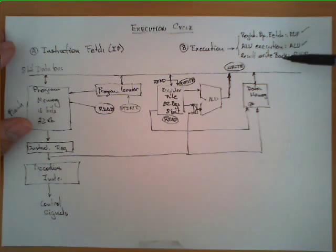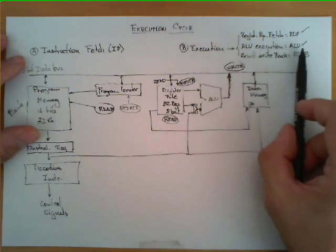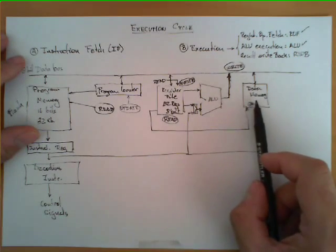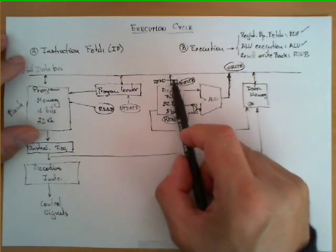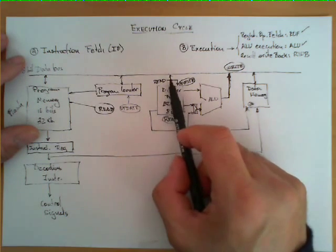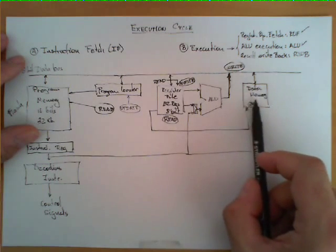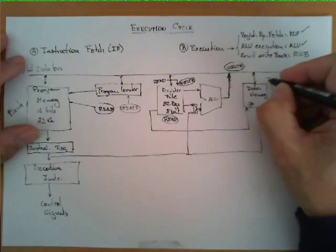For an instruction that reads or writes from memory, the three stages are the same with the exception that instead of the ALU performing an operation, the memory reads or writes the data. If it is a read operation, the result goes back to the bus and back to a register. If it is a write operation, data comes out of the register file and the address enters the data memory for a write operation.